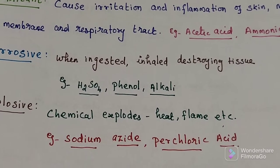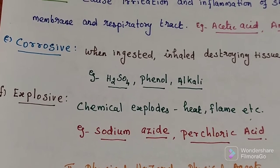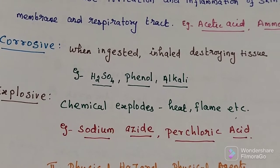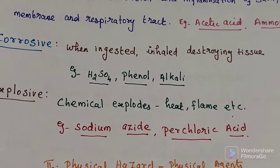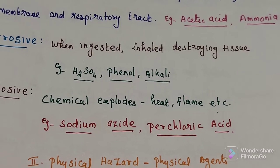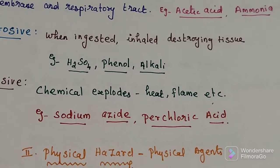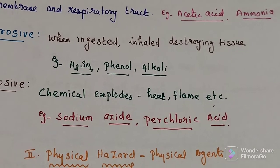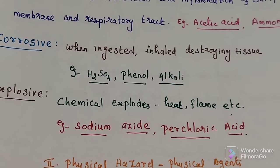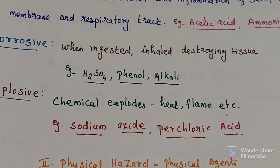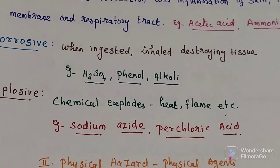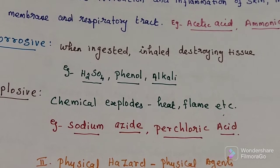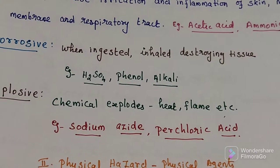The last chemical hazard type is explosive. A chemical which explodes by heat or flame. Examples include sodium azide and perchloric acid.